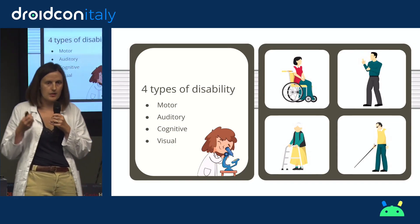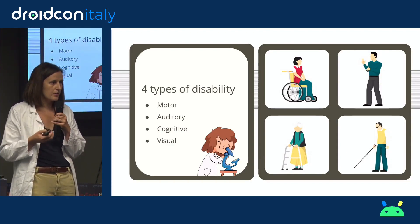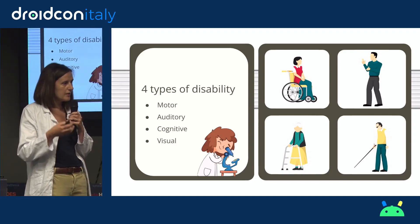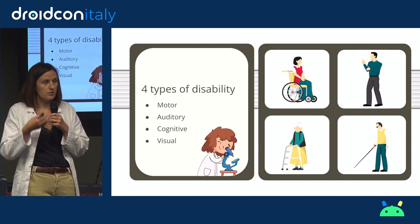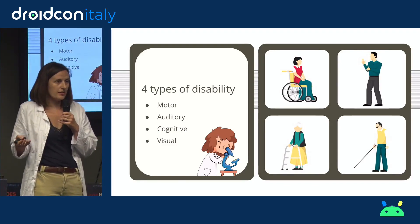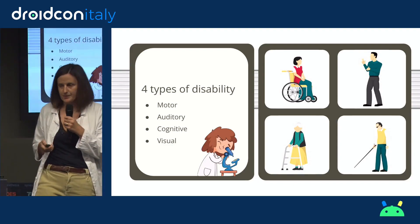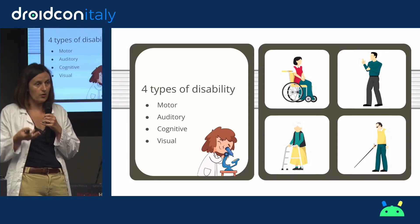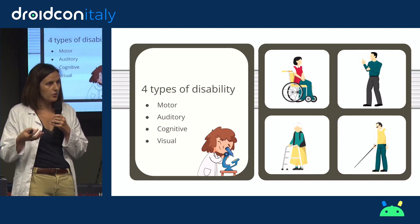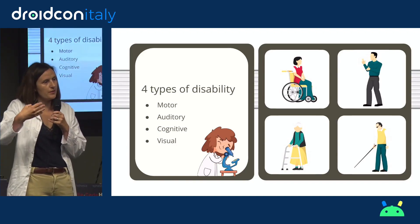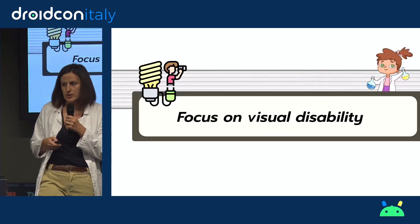About auditory disability, the most important thing to do is when you have audio or video media in your app, you have to add subtitles or transcription. As developers, it's not really our responsibility to create those. About cognitive disability, a lot of best practices are UI and UX best practices, so they come before reaching us as developers. So let's focus on visual disability.